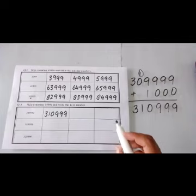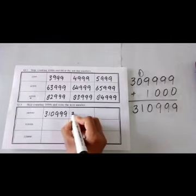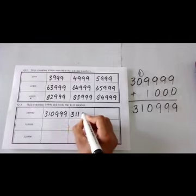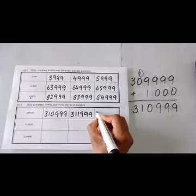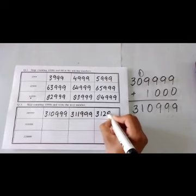When we add up 1000 into it, we will get 311,999. The next number will be 312,999.